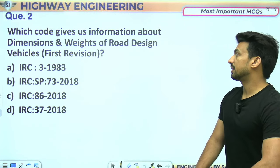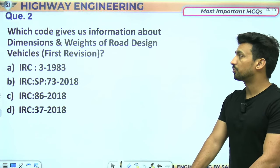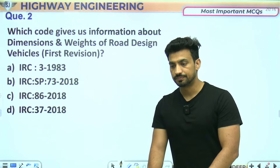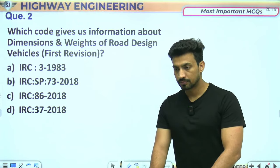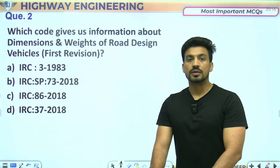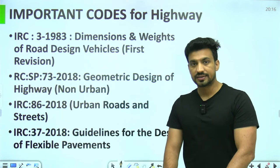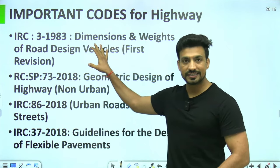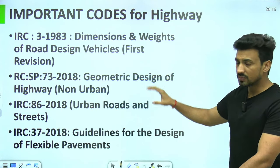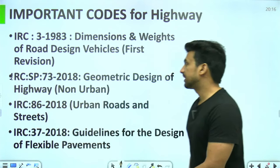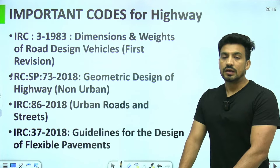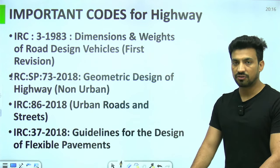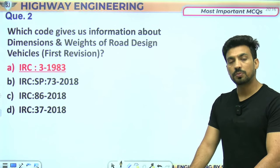Next question: Which code gives us the information about dimensions and weight of road design vehicles? इसका सही answer है IRC 3-1983। IRC 3-1983 dimensions and weights of road design vehicles के लिए use होता है। IRC 73 geometric design of highway के लिए, IRC 86 urban roads and streets के लिए, IRC 37 guidelines for design of flexible pavement के लिए। Option A correct answer है।